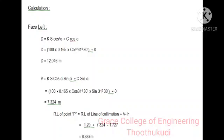Likewise, V = KS cosα sinα + C sinα. Then the values are substituted as 100 × 0.165 × cos(31°30') × sin(31°30'). The answer is 7.324 meters.